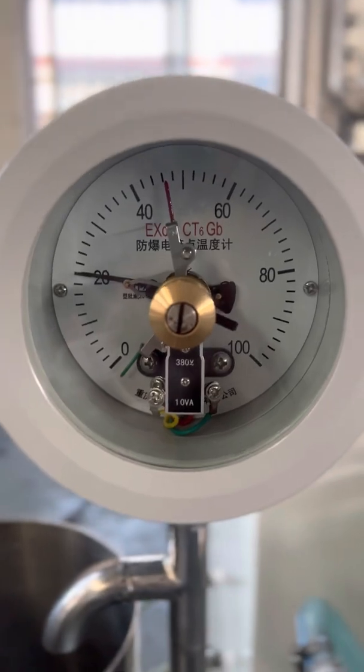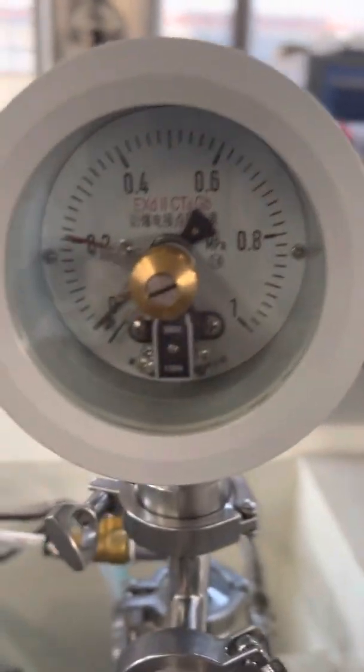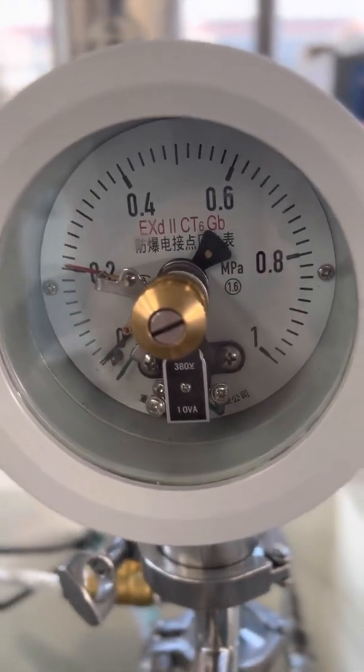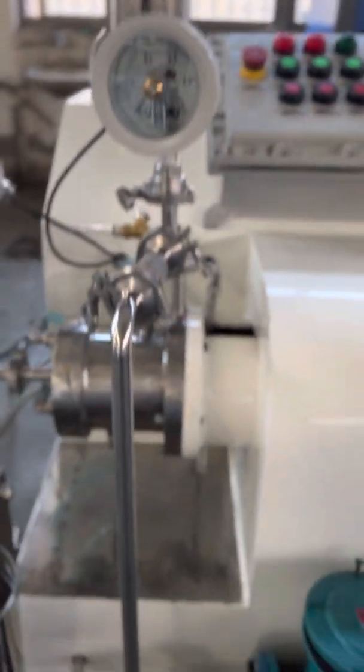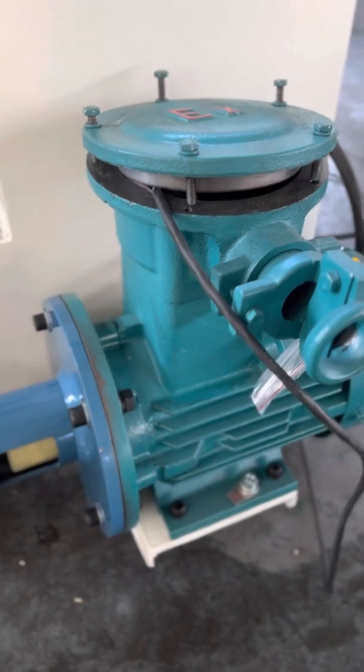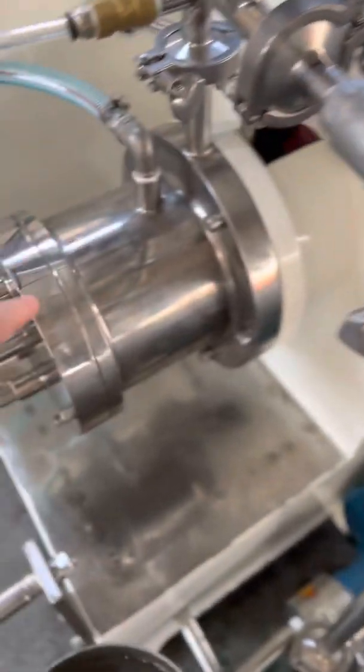Electric contact temperature meters, explosion-proof, and electric contact pressure meters, explosion-proof. The feeding tank is connected to the feeding pump. Here is the gear pump and the feeding pipe to the grinding chamber.